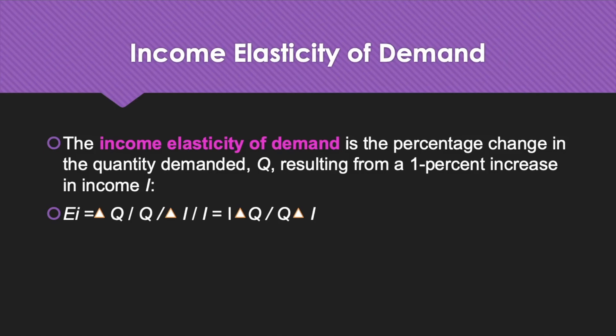Now we move on to other demand elasticities — elasticities of demand with respect to variables besides price. The demand for most goods rises when consumer income rises. The income elasticity of demand is the percentage change in quantity demanded Q resulting from a 1% increase in income I. The formula is: EI = (ΔQ/Q) ÷ (ΔI/I), which equals I·ΔQ divided by Q·ΔI.